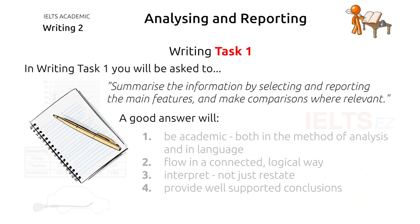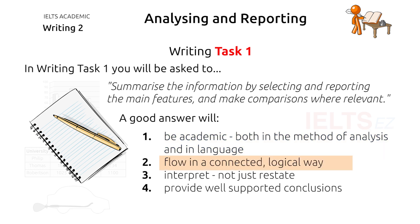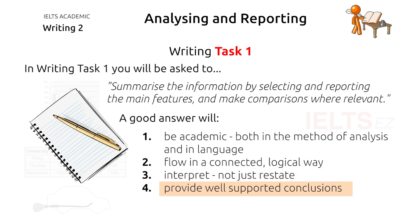To score well in this type of question, you need to include a number of things in your written response. Firstly, your written response must be of an academic standard, both in the way the information is analyzed and in the type of language used. Secondly, your written response must flow from one idea to the next in a clear and logical way. Remember, the way each idea is expressed makes a big impression. Thirdly, a written response is to be an academic interpretation of the information — much more than just a simple restatement of the words written in the question. Lastly, a high-scoring Task 1 written response would offer a conclusion which is well supported by the data given in the question.